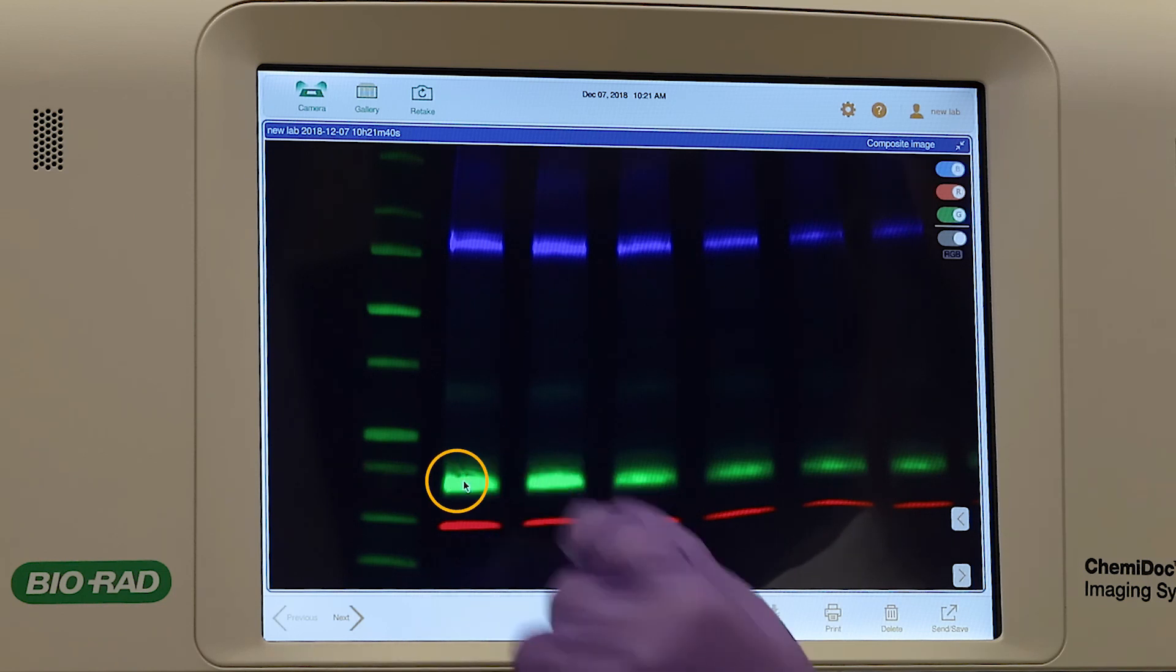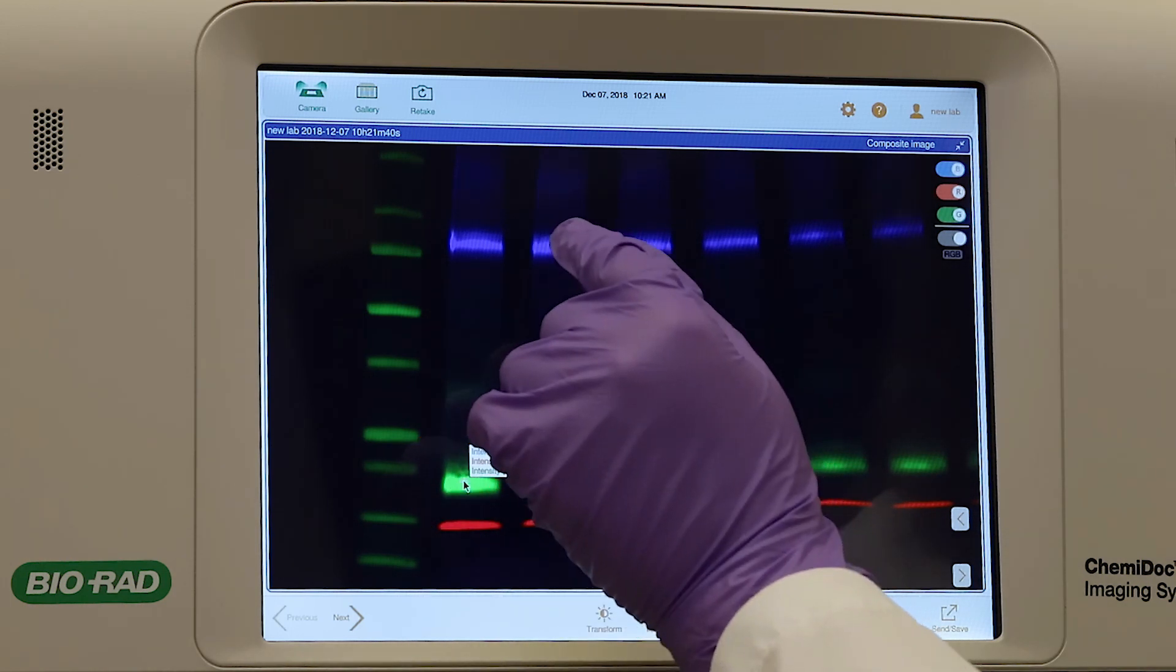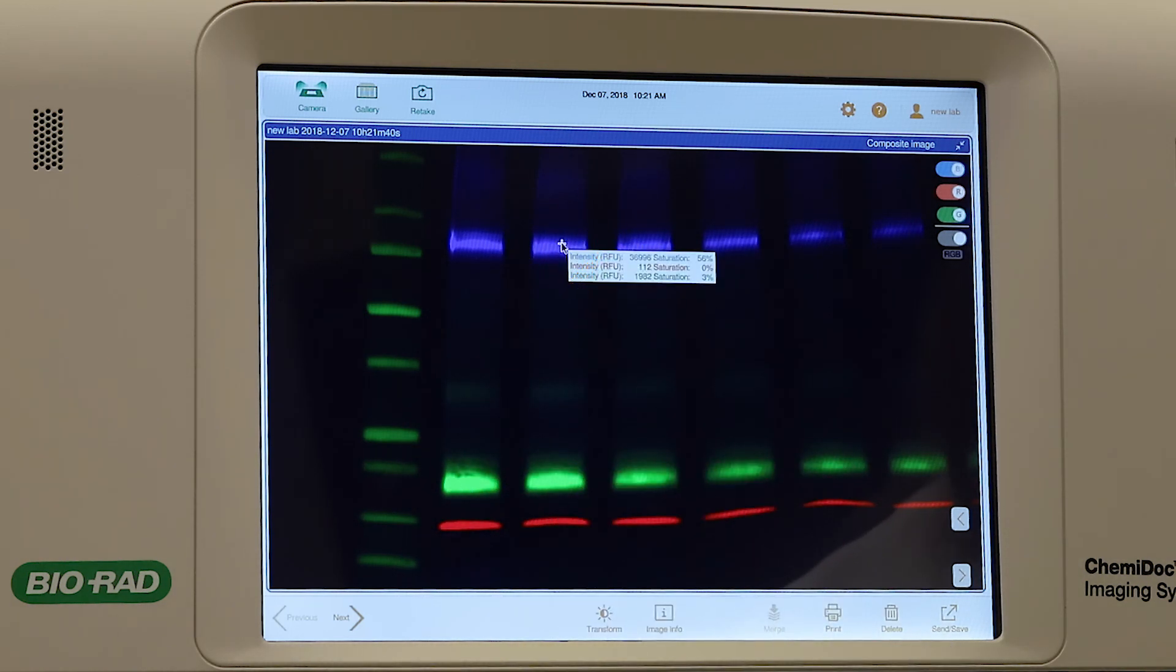For a quick assessment of the band intensities, you can tap each band. The relative fluorescence units and percent of saturation will appear.